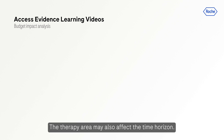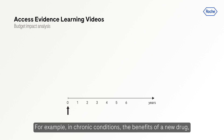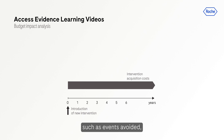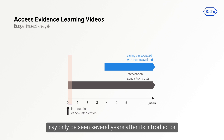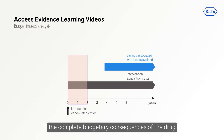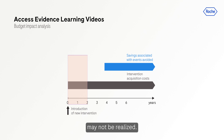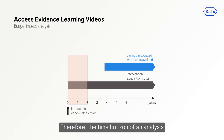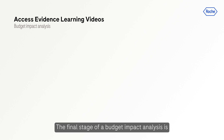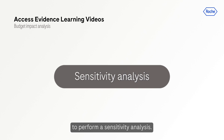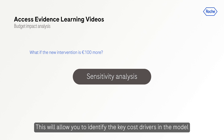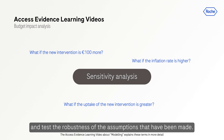The therapy area may also affect the time horizon. For example, in chronic conditions, the benefits of a new drug — such as events avoided — may only be seen several years after its introduction. Within a short time frame, such as two years, the complete budgetary consequences of the drug may not be realized. Therefore, the time horizon of an analysis would need to be extended to reflect the true impact of the drug. The final stage of a budget impact analysis is to perform a sensitivity analysis, which will allow you to identify the key cost drivers in the model and test the robustness of the assumptions that have been made.